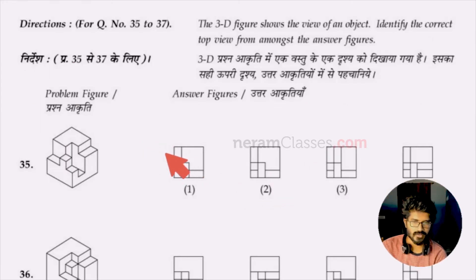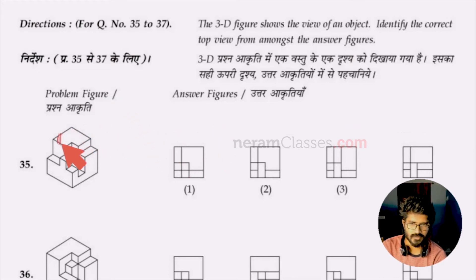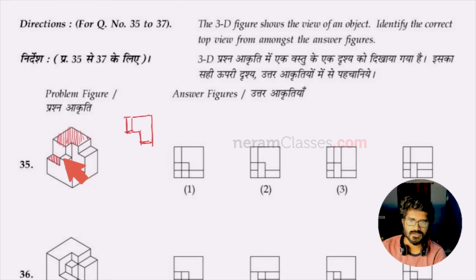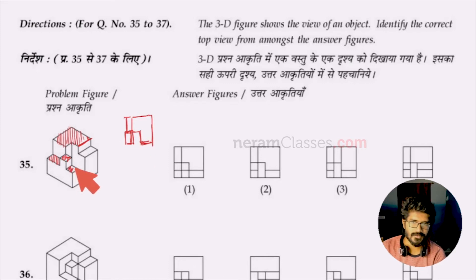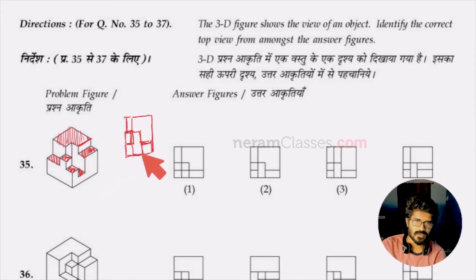Questions 35 to 37 require finding the correct top view for a given 3D solid. For question 35, I'll draw the top surface sketch. Starting with the first surface, then the next surface and small square ending at this line, then the next shape coming to the edge, and a hidden shape completing the view. Comparing with options: option one is wrong due to extra lines, option three is wrong with two columns, option four is wrong, and option two exactly matches our sketch.